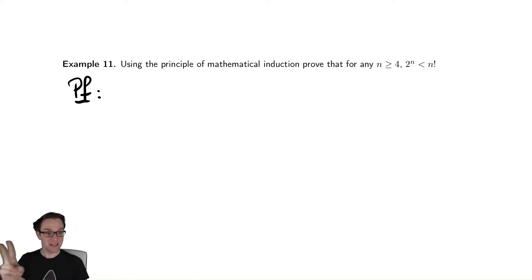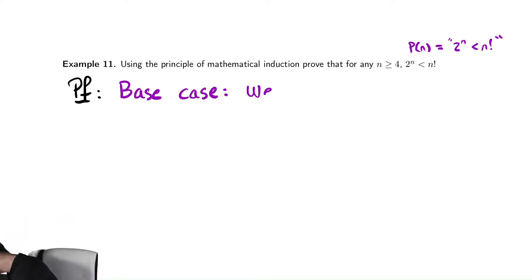So the base case is whatever the smallest value required for the statement is. In this case, my P(n) is that 2^n is less than n factorial, and that's supposed to be true for n greater than or equal to 4. So for the base case, we must show that P(n) is true for 4. So P(4) is true.